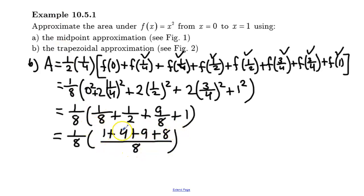So I end up with 10 plus 12 is 22. So one eighth times 22 over eight is equal to 22 over 64.